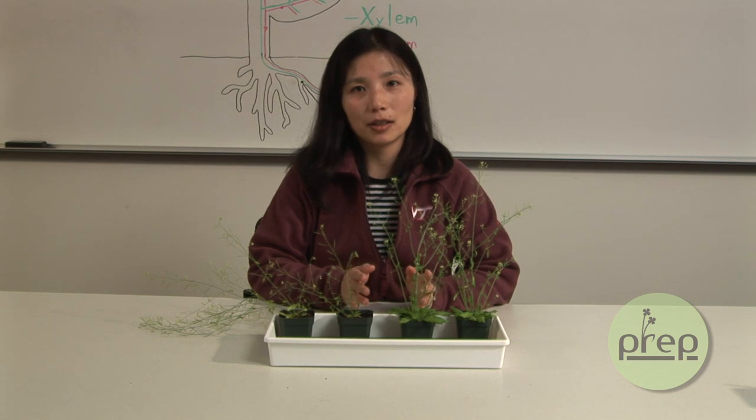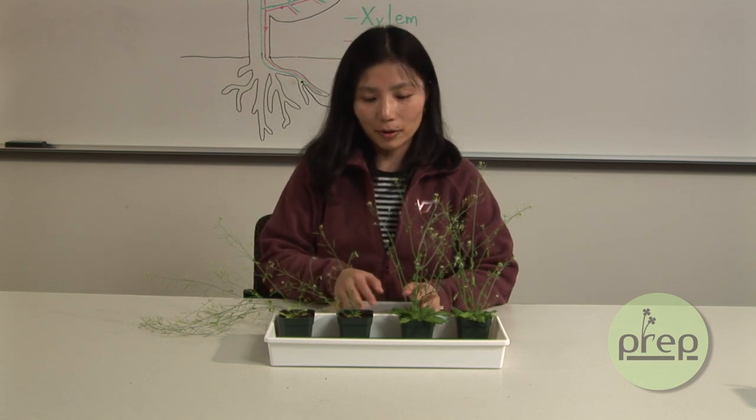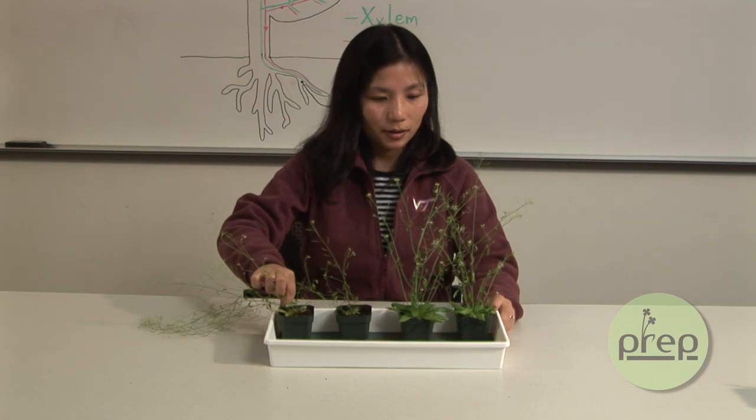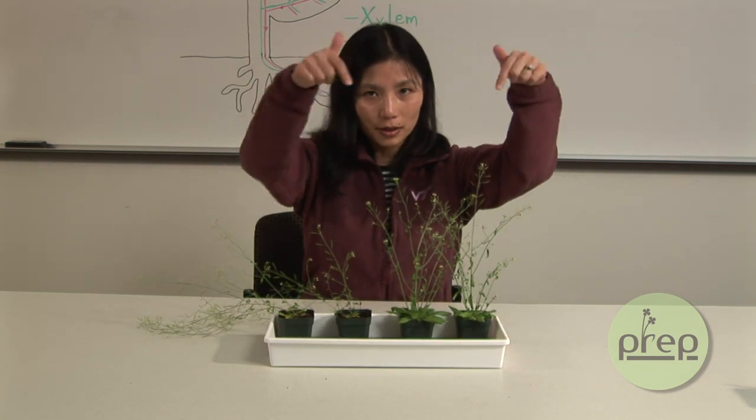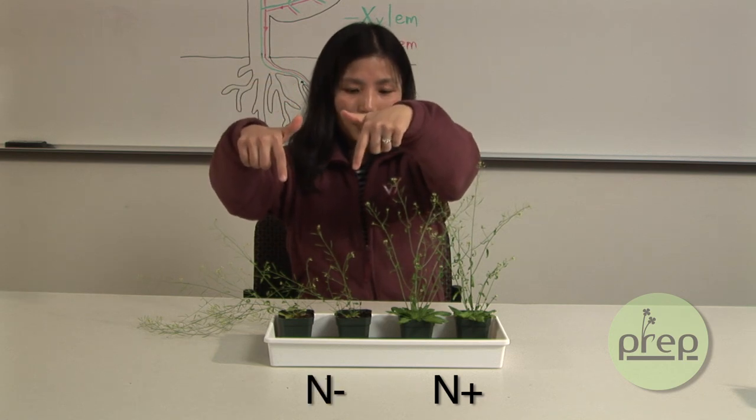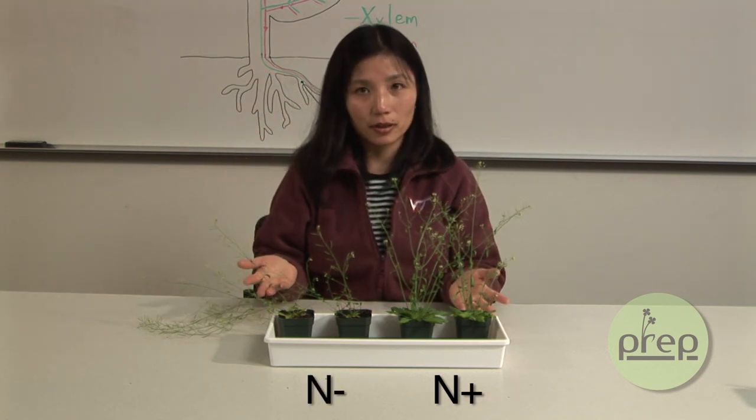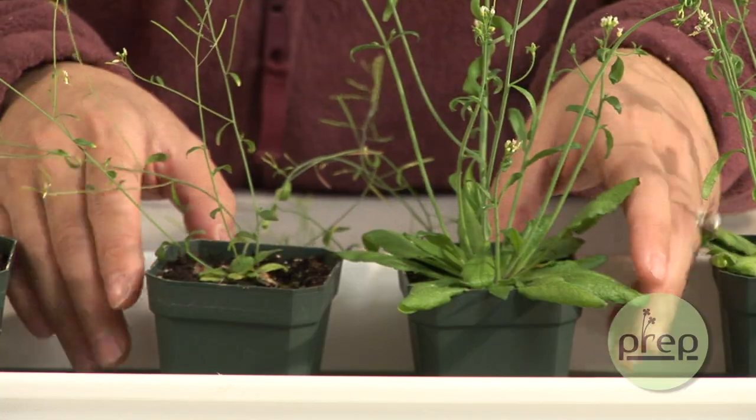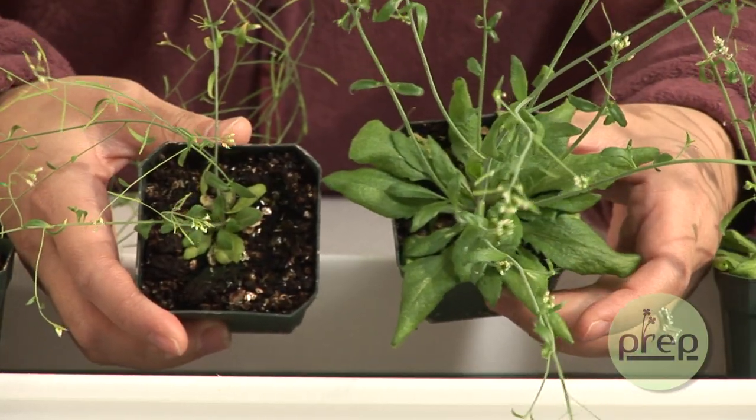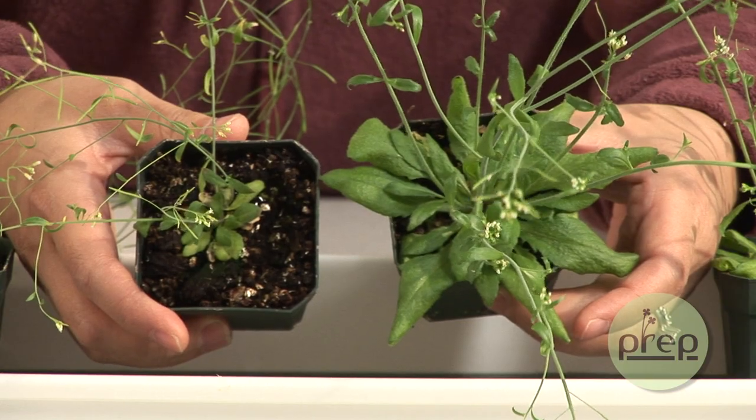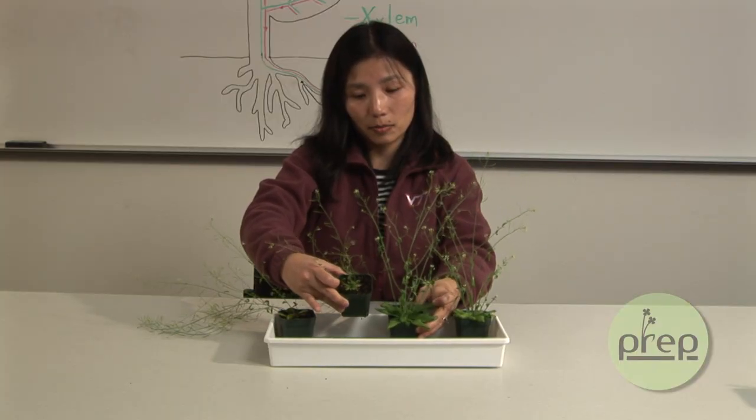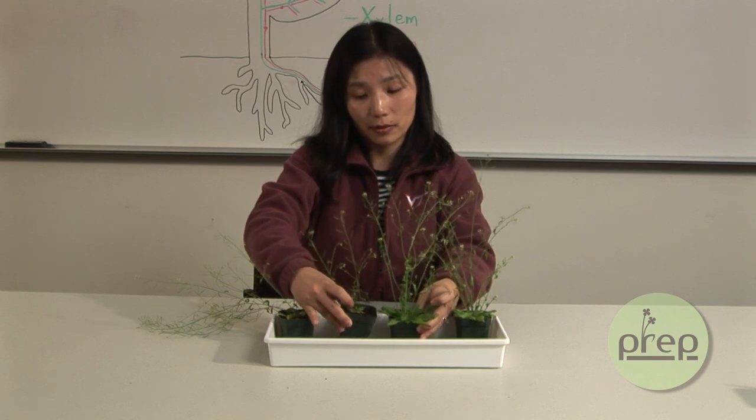To give you an idea what nitrogen-sufficient and deficient plants look like, I prepared two groups of Arabidopsis plants right here, which received enough nitrogen or insufficient nitrogen. As you can see, the plants look very different. So if you compare leaf sizes, you can see that nitrogen-sufficient plants have much larger leaves. And these nitrogen-deficient plants have much smaller leaves.